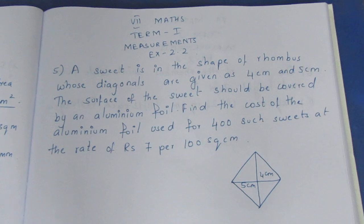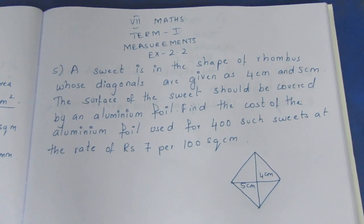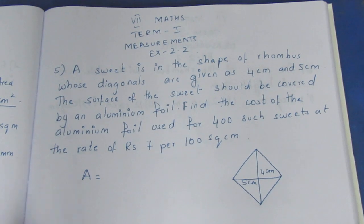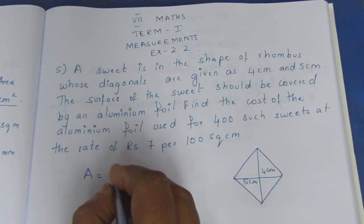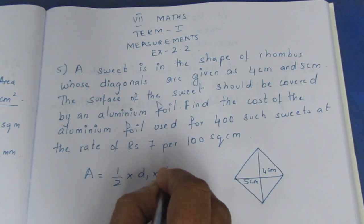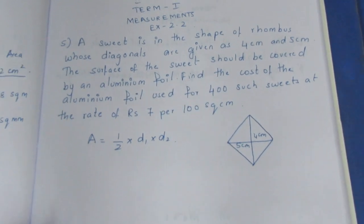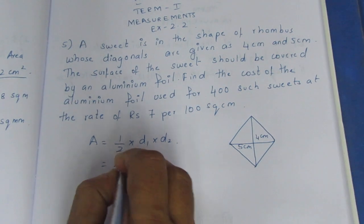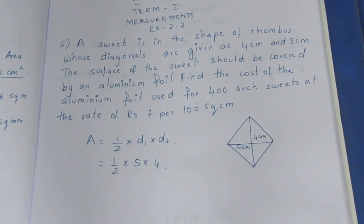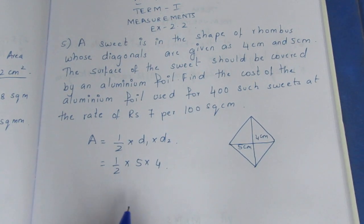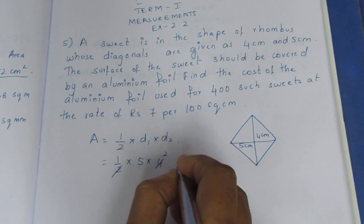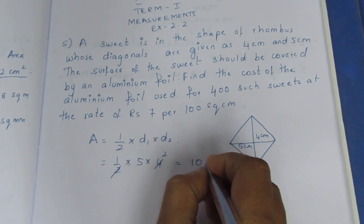First, we need to find the area to be covered. The area of a rhombus is calculated using the formula: half into d1 into d2. So, area = ½ × D1 × D2 = ½ × 4 × 5. Multiplying 4 into 5 gives 20, and 20 divided by 2 gives 10 square cm.